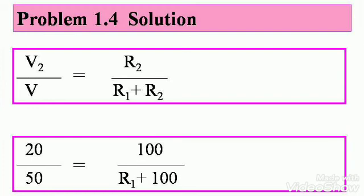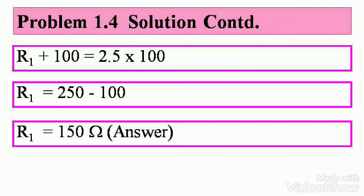Let's rearrange it in a way that we can get R1. By transposing appropriately, we get R1 plus 100 equals 2.5 into 100. Therefore, R1 equals 250 minus 100 and R1 is 150 ohms. That is your answer.